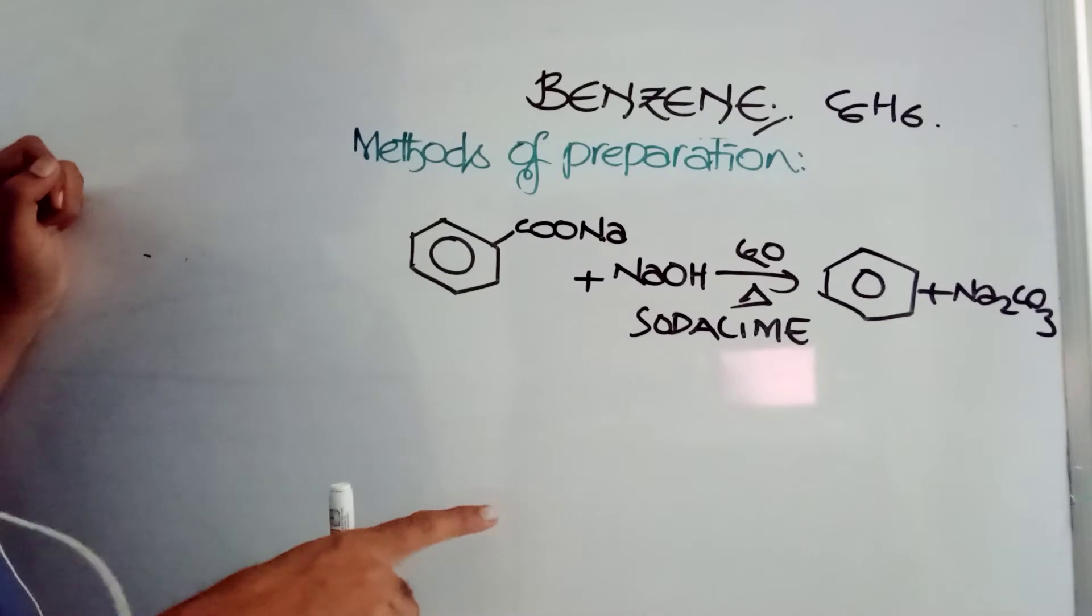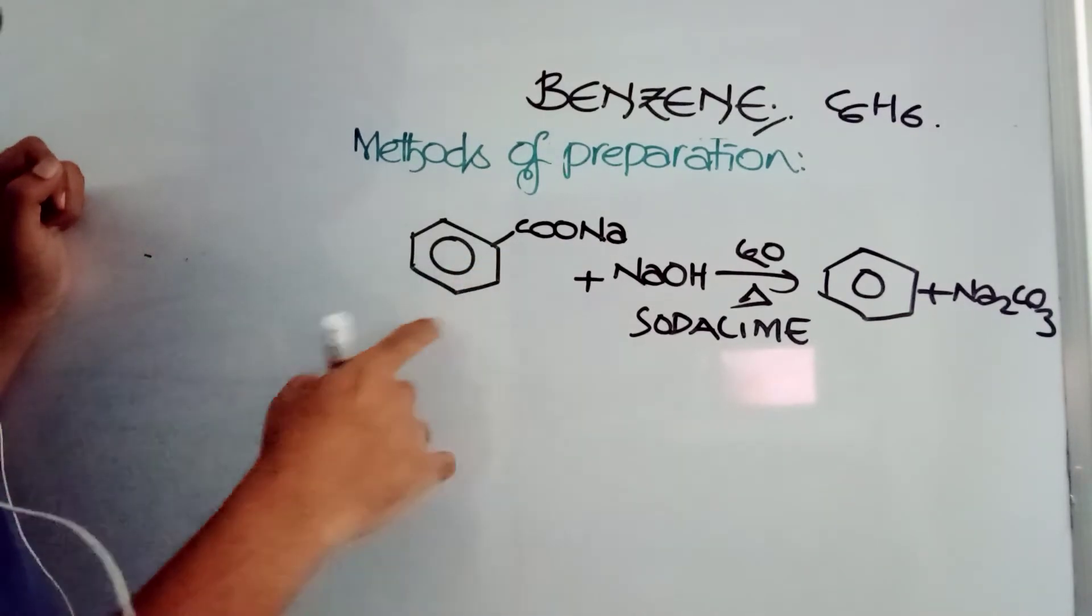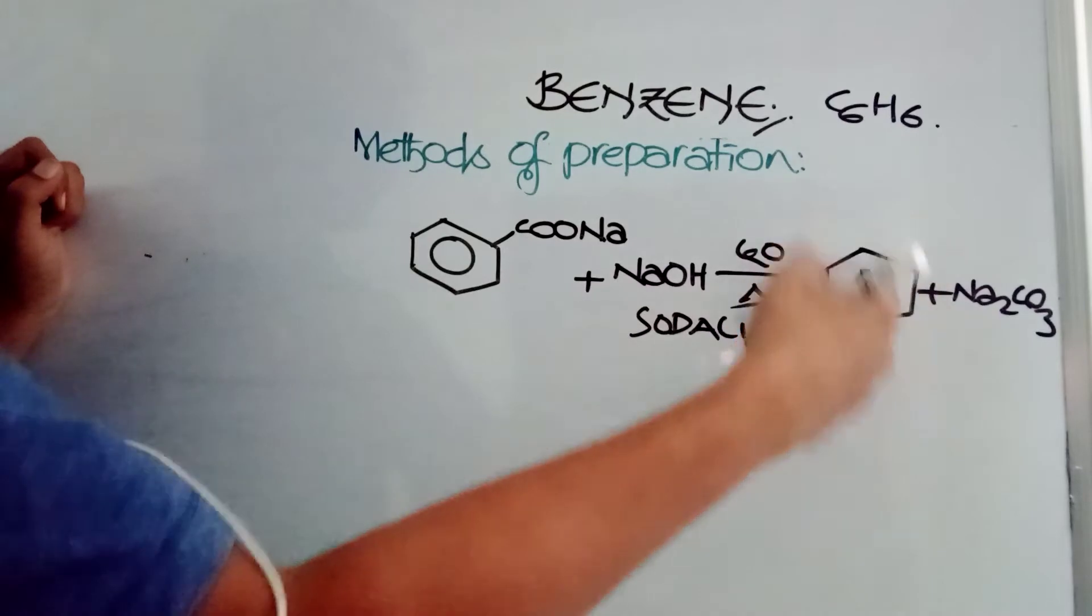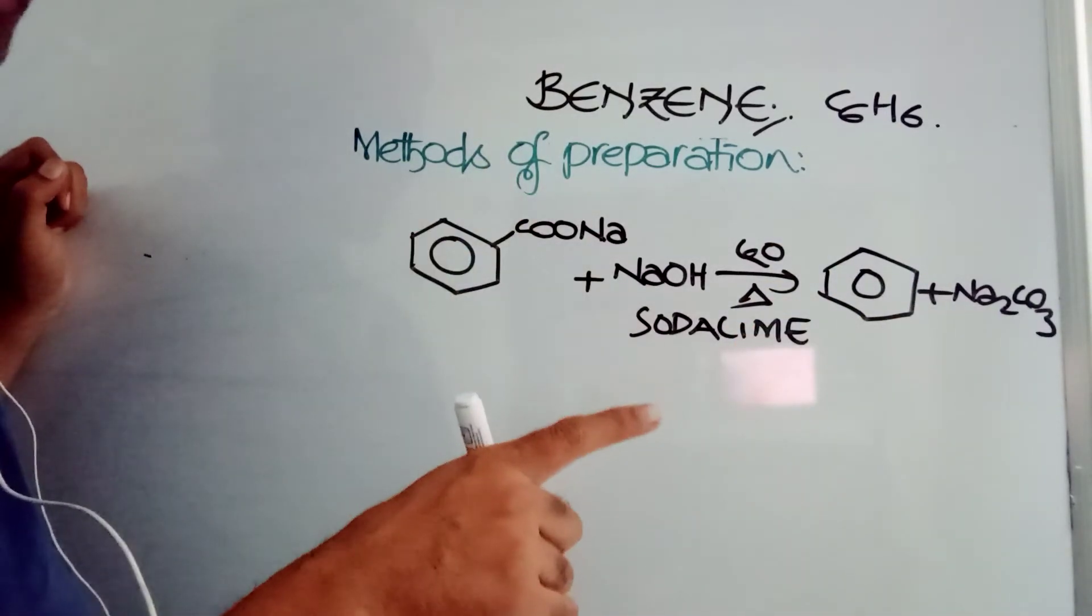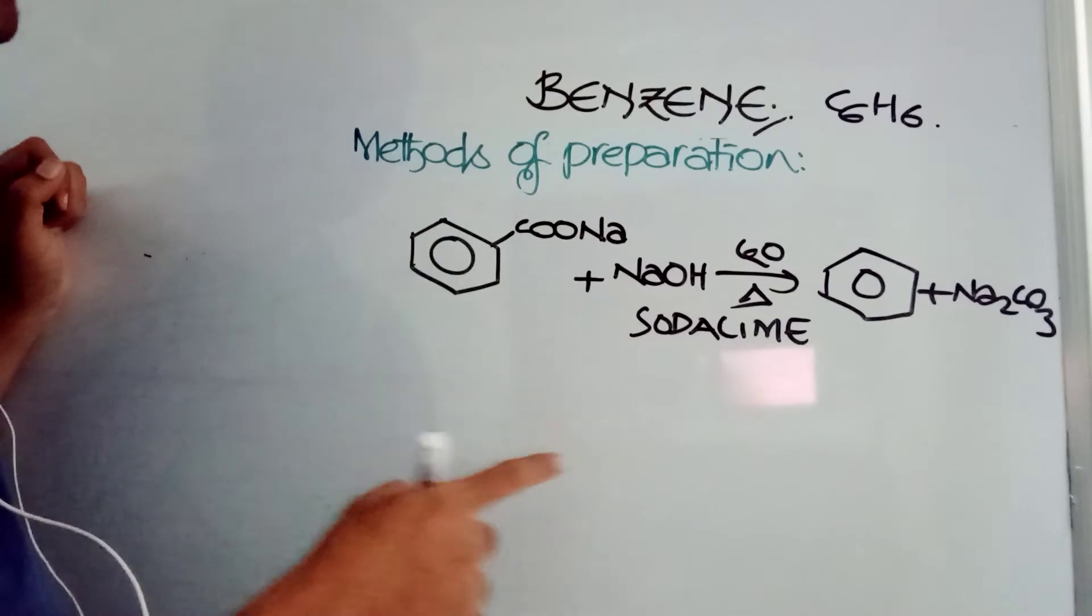You will be getting here benzene plus Na2CO3. This is a carbon degradation reaction. Your parent compound contains 6 plus 1, 7 carbons, but only 6 carbons are there. Carbon degradation reaction. Number of carbon atoms are getting decreased. Soda lime is NaOH and CaO.